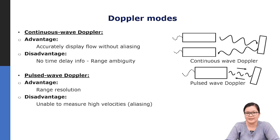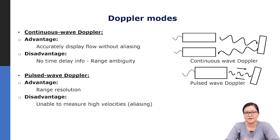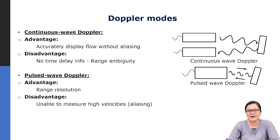The advantage of continuous wave Doppler is that it can accurately display flow without aliasing. A disadvantage is that, with continuous wave signals, there is no time delay information, making it challenging to determine the range location of what is being imaged. The advantage of pulsed wave Doppler is better range resolution using time delay information. A disadvantage is the inability to measure high velocities due to aliasing, which will be discussed in a subsequent lecture.